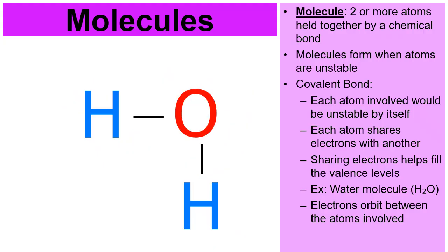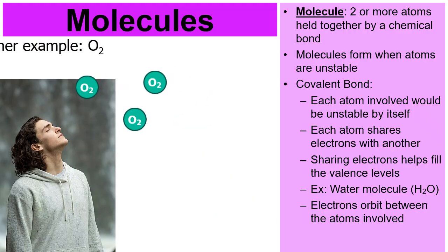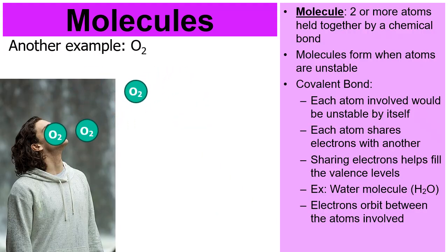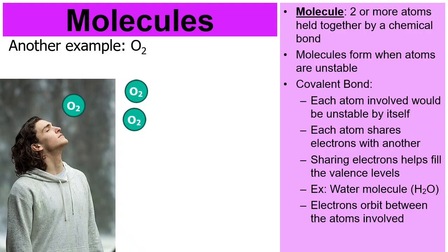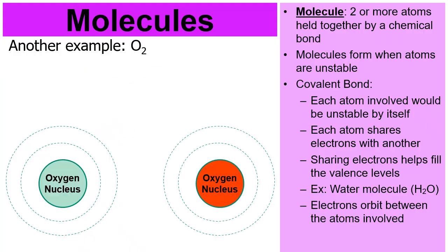I can draw it like this as well — the dash represents the two shared electrons. Notice the H, then a dash connects to the O, then a dash to the other H. Every dash represents two electrons. Another example of a molecule is the oxygen that we breathe — we breathe a molecule of O2, two oxygen atoms stuck together to make a very small molecule.